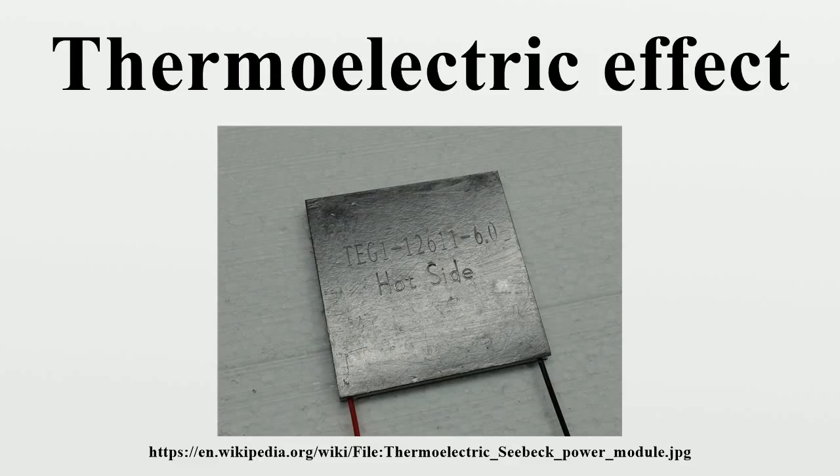Temperature measurement. Thermocouples and thermopiles are devices that use the Seebeck effect to measure the temperature difference between two objects. Thermocouples are often used to measure high temperatures, holding the temperature of one junction constant or measuring it independently.